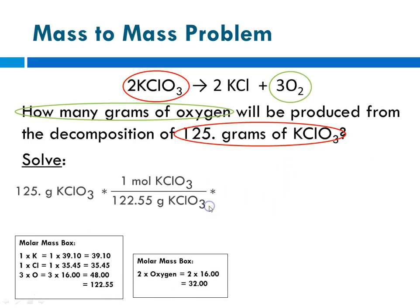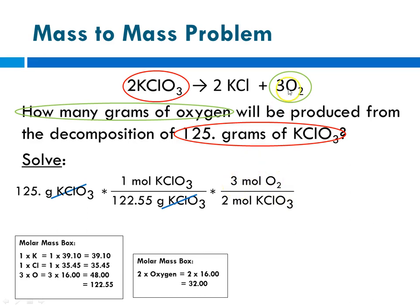Now we're ready to begin the calculation. We're going to start with the given — 125 grams of potassium chlorate — times molar mass for potassium chlorate, so 1 mole of potassium chlorate per 122.55 grams. Notice our given was grams, so in our first conversion factor, grams needs to be in the denominator so that grams of potassium chlorate cancels out. Now we're ready to go to our mole ratio from the equation: 3 moles of oxygen for every 2 moles of potassium chlorate. Moles of potassium chlorate will cancel out.